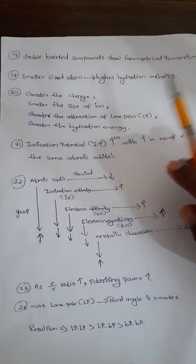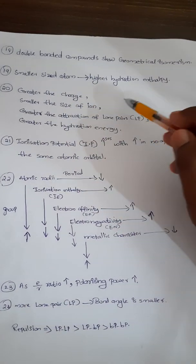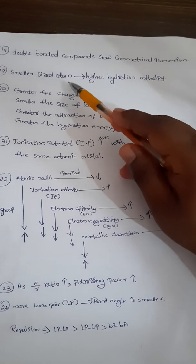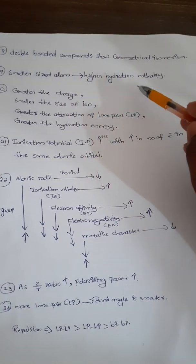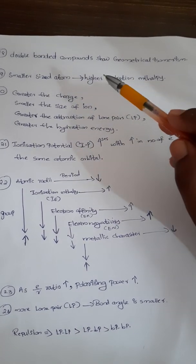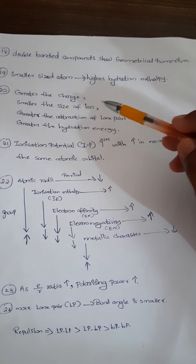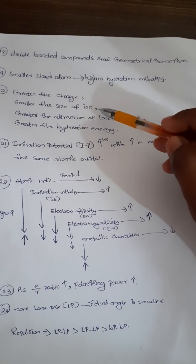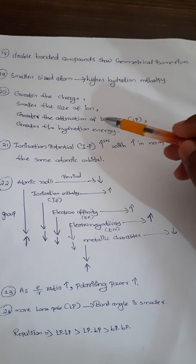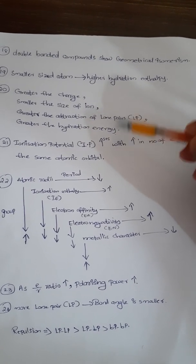Next one: if smaller is the size of the atom, then higher will be the hydration enthalpy. Next point: if greater the charge, then smaller will be the size of the ion, but greater will be the attraction of lone pairs and the hydration energy.